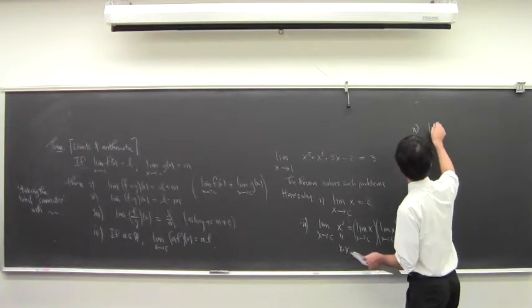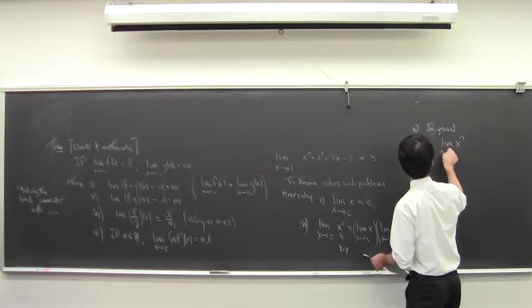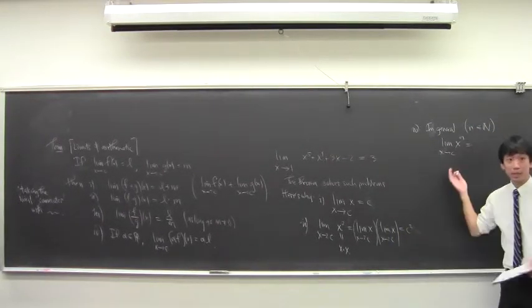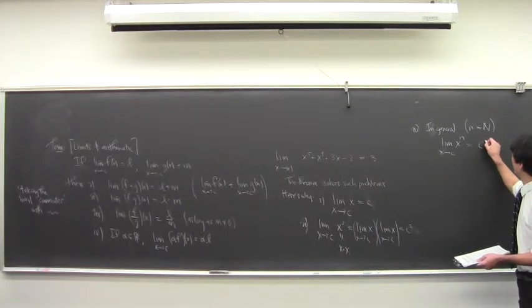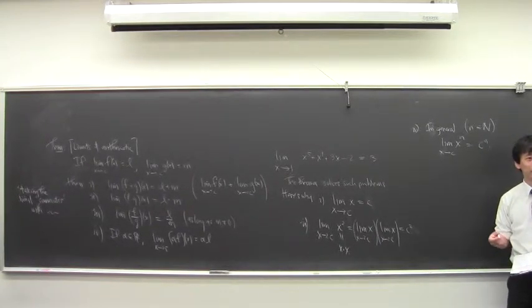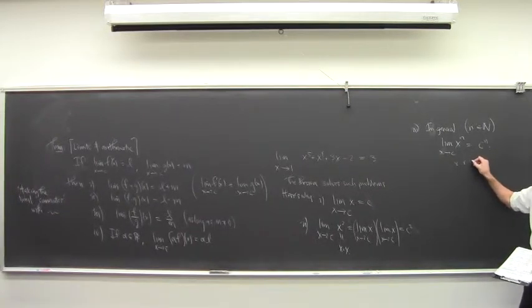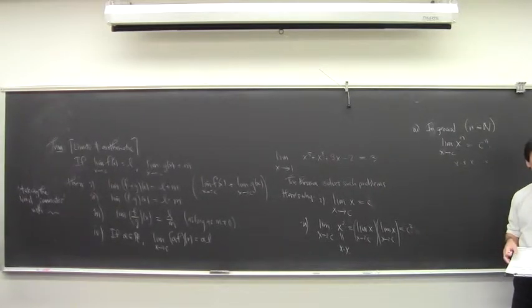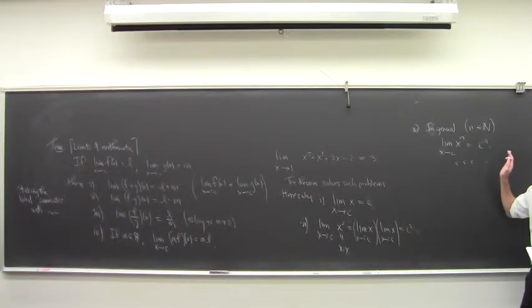In general, the limit of x to the n as x approaches c, for n some natural number, is going to be c to the n. Why? Because x to the n is just x times x times x... n times, and then you use the same thing — the product of those limits — and you get c to the n.